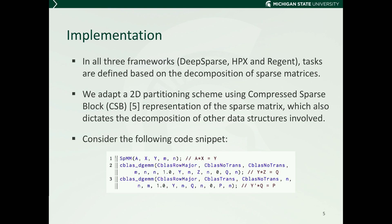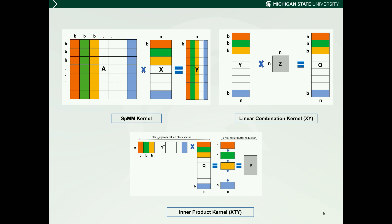In all three frameworks — DeepSparse, HPX, and Regent — we define tasks based on the decomposition of the sparse matrices. The 2D partitioning of a matrix is known to expose a higher degree of parallelism than 1D partitioning. Therefore, we adopt a 2D partitioning scheme where the tasks are defined based on the CSB representation of the sparse matrix. Note that it also dictates the decomposition of all other data structures involved, such as input and output vectors. This snippet includes three of the mostly used sparse solver kernels: an SpMM, a linear combination, and an inner product kernel. When executing the snippet, for all frameworks, first, the SpMM operation is partitioned into tasks, where each task operates on a block of matrix A and a block of x and y.